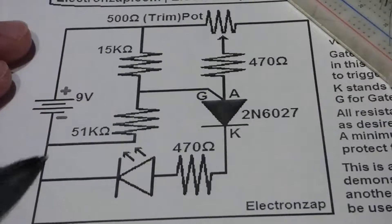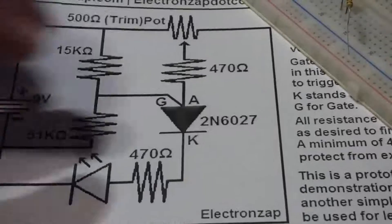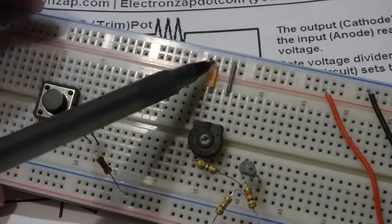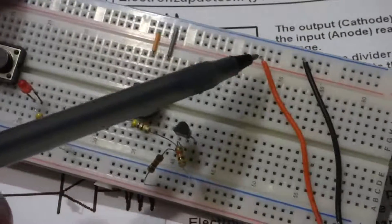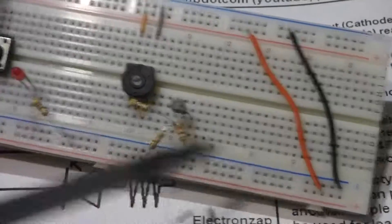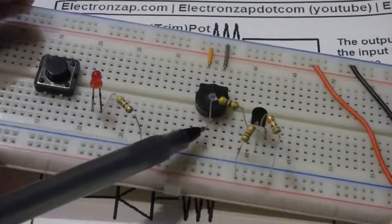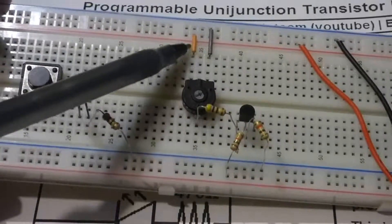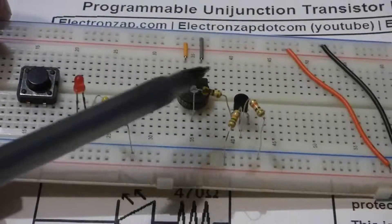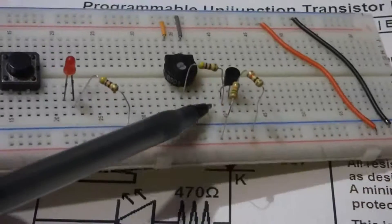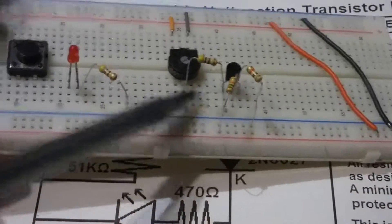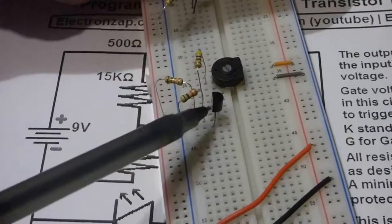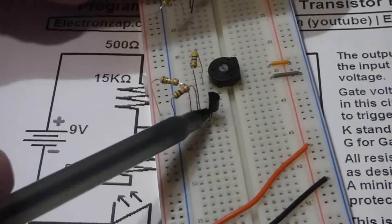So I took the trim pot, I got my positive connection and my negative—both rails are connected here—and then the protective resistor for when I set the voltage all the way to positive, make sure there's resistance that comes to this top pin there of the programmable unijunction transistor, the anode.